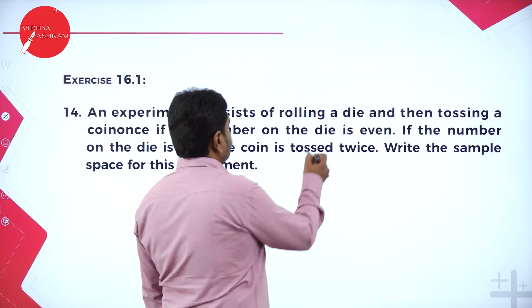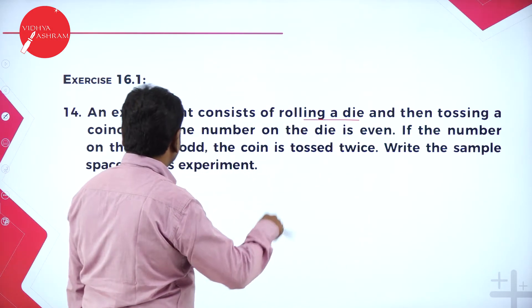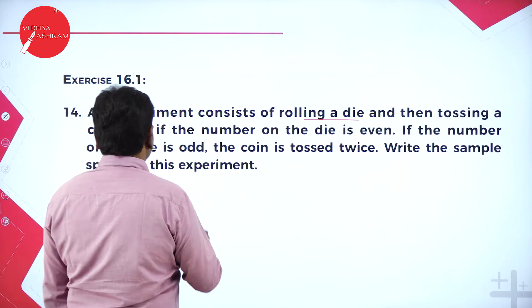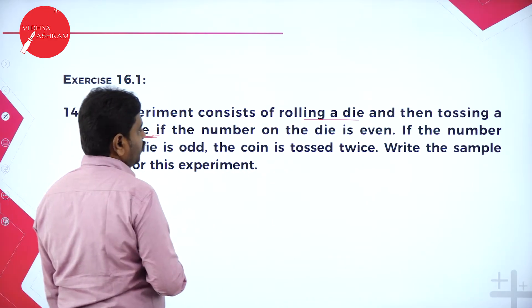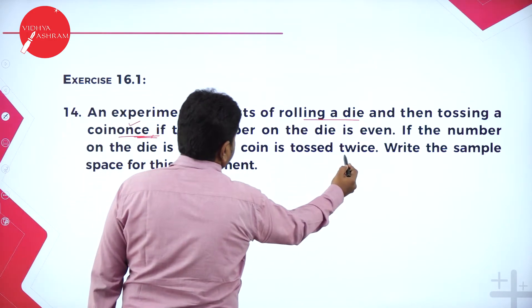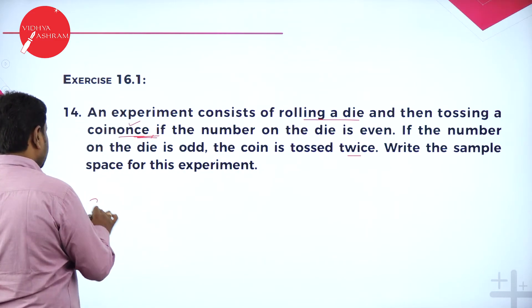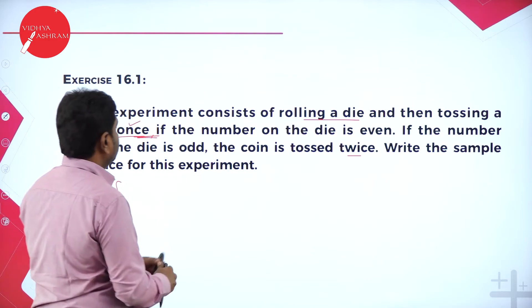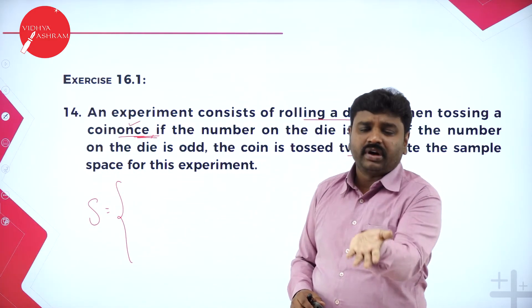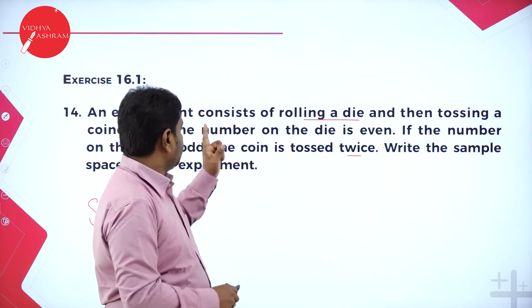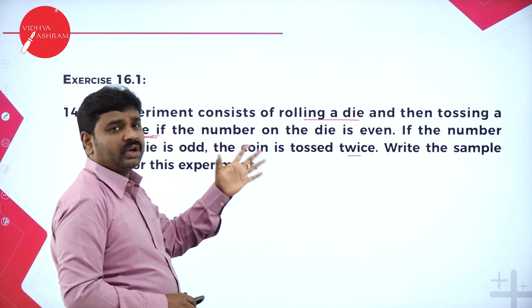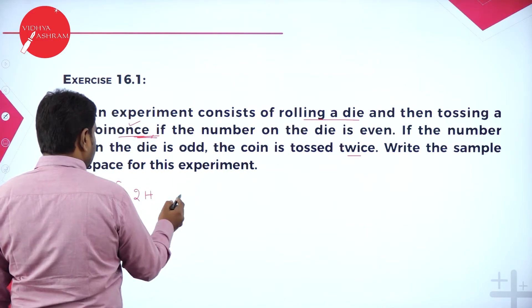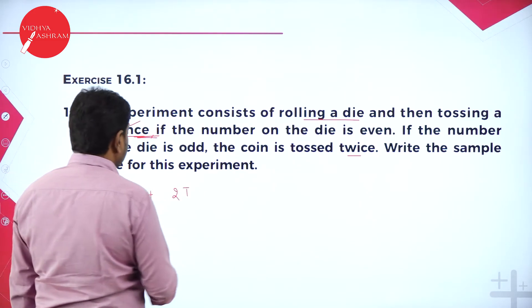An experiment consists of rolling a die, then tossing a coin. If the number on the die is even, you should toss the coin only once. If the number on the die is odd, you should toss twice. Write the sample space. So I roll a die — say I get 2, which is even, so I toss only once: I may get 2H or 2T.